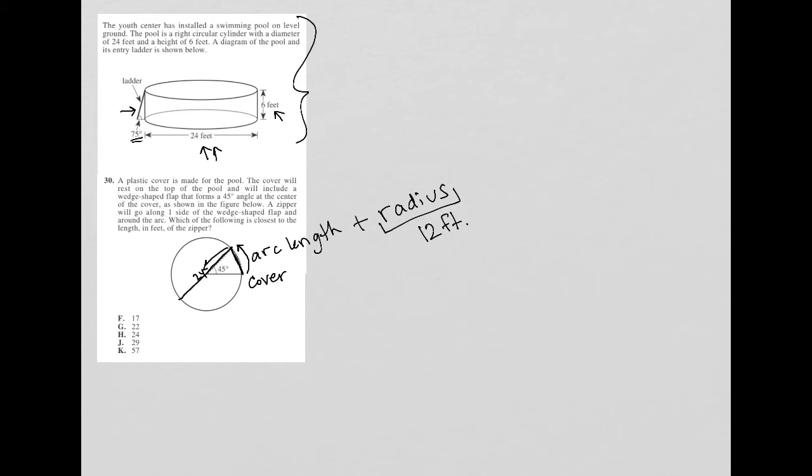So now how do I figure out the arc length? The arc length, there's a formula for that. The arc length is going to be the central angle, which is 45 degrees, divided by the degree measurement for the entire circle, which is 360 degrees.